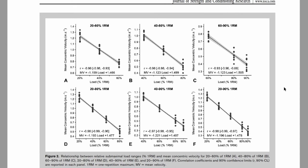To derive their individual 1RM predictions we've taken the individual velocity at 1RM of session 1, put it into the individualized linear regression equation for session 2 and 3, and received therefore their 1RM predictions for session 2 and 3.